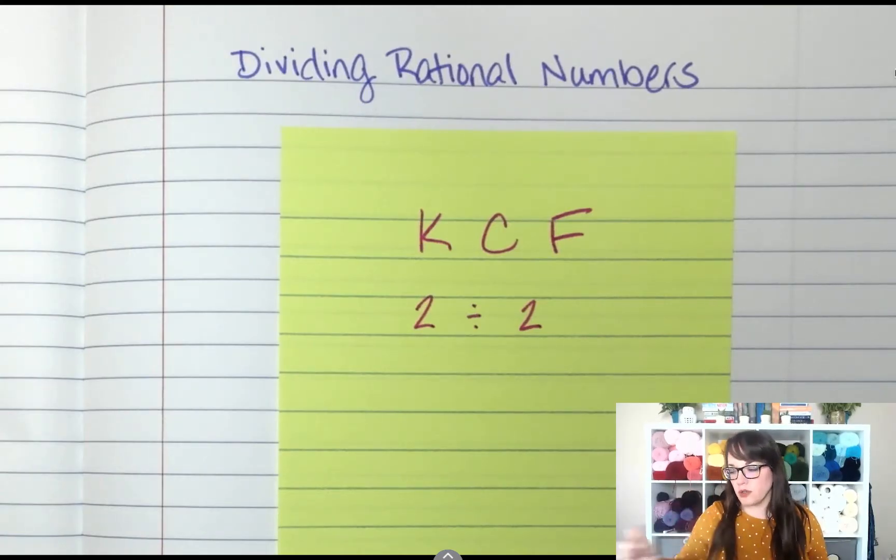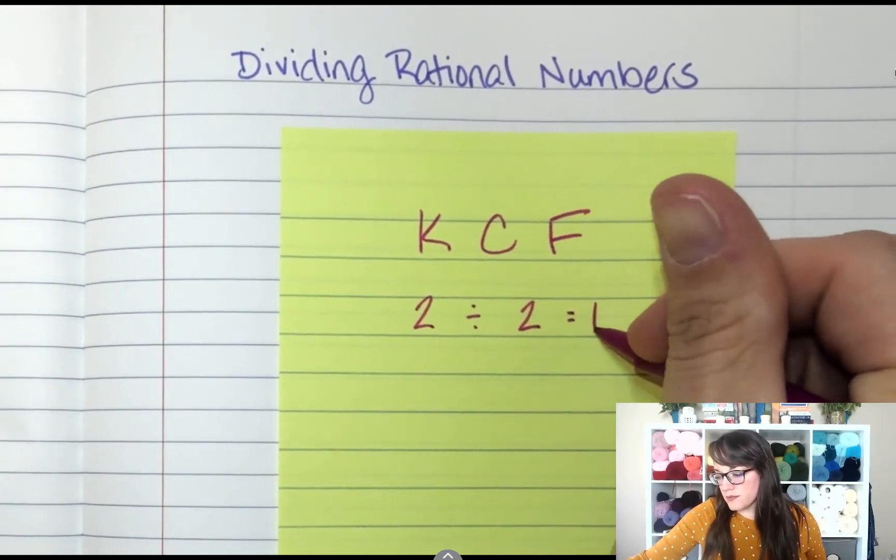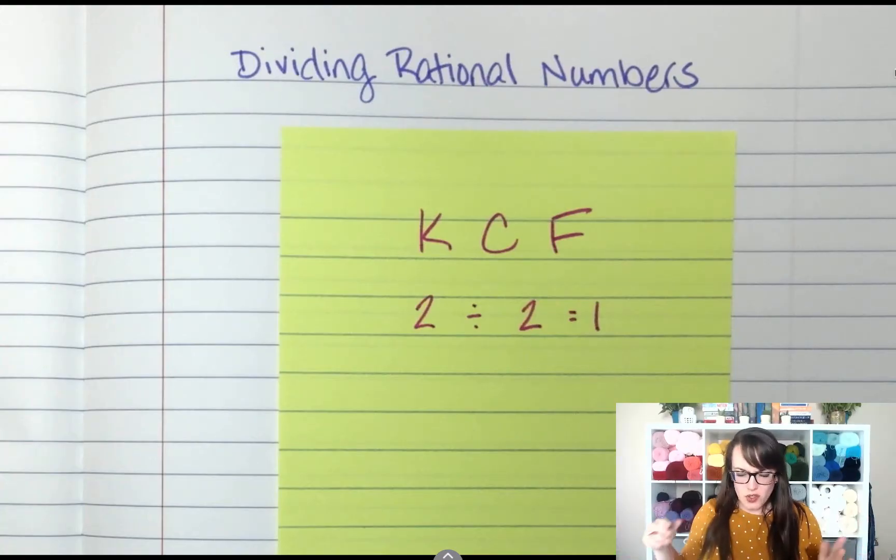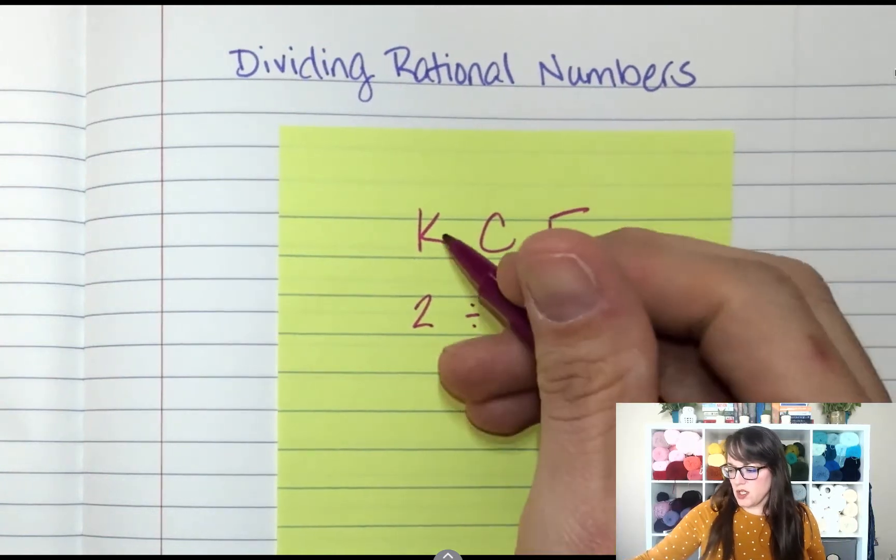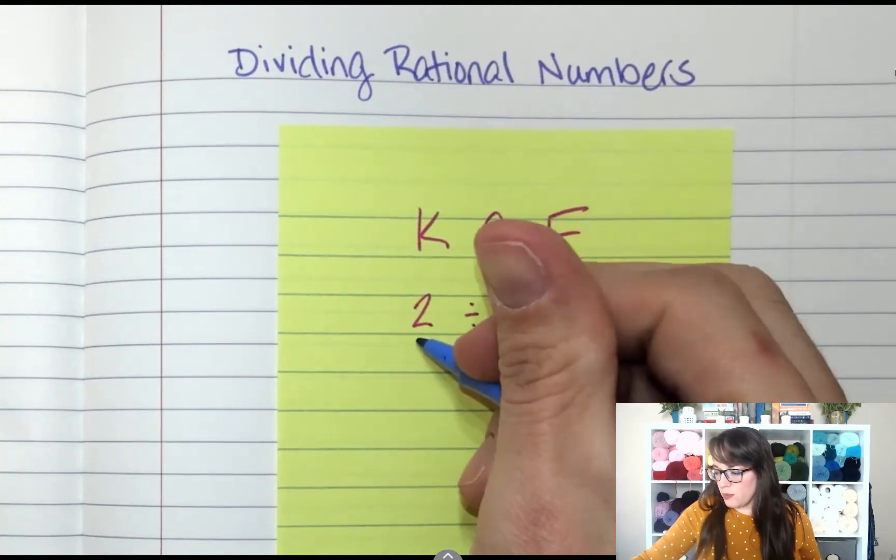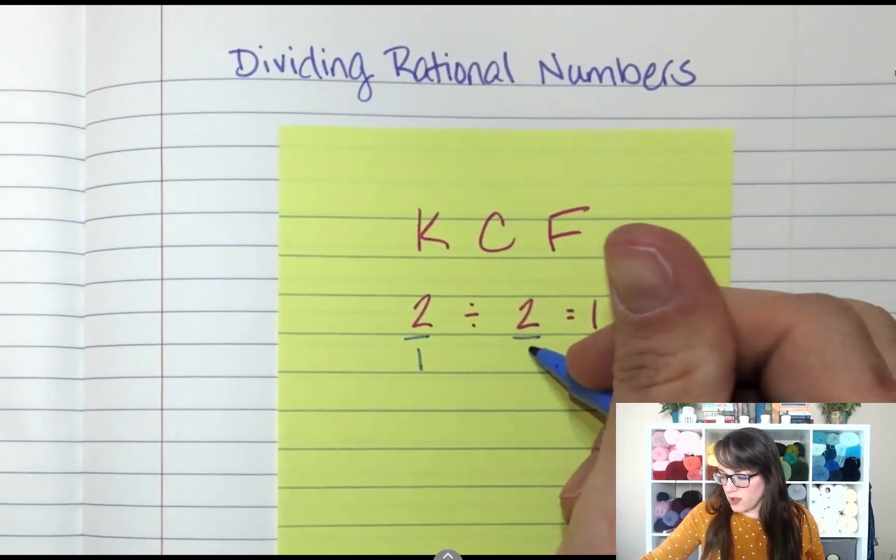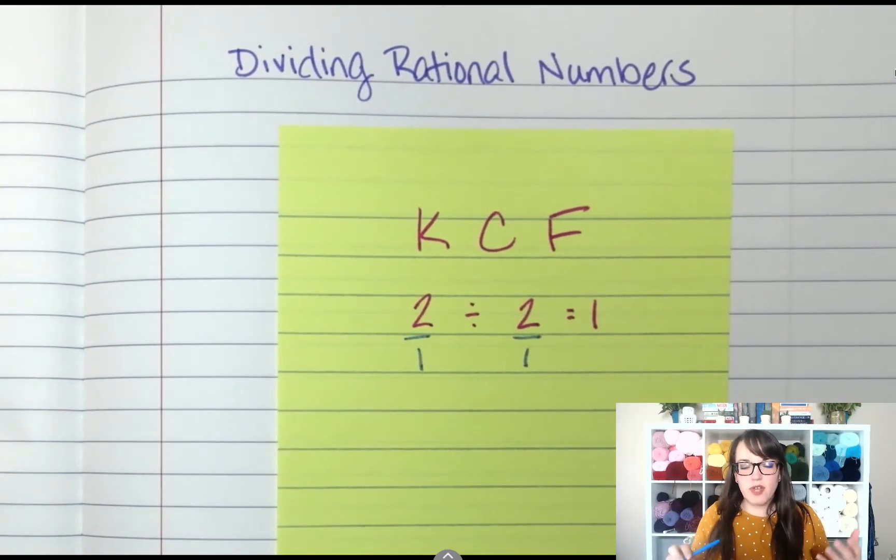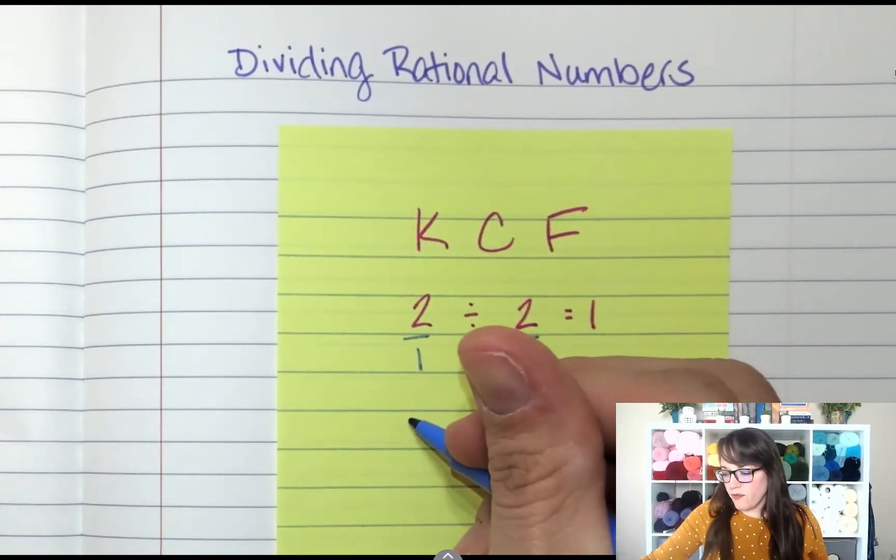So if I had 2 divided by 2, we know that 2 divided by 2 is 1. So why does keep change flip work? If I change it, would I still get 1? When I write whole numbers as a fraction, you put them over a denominator of 1, so now we have two fractions and we're dividing.